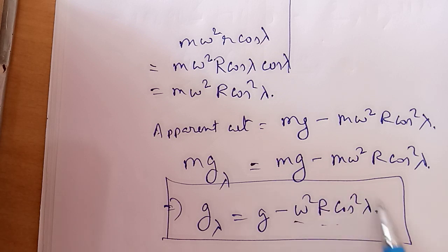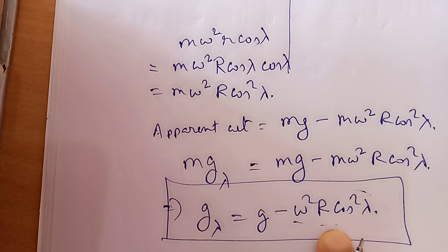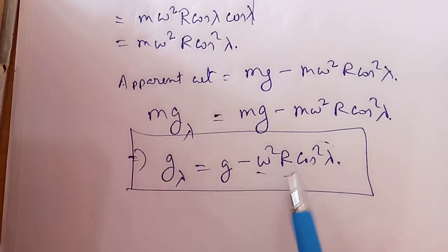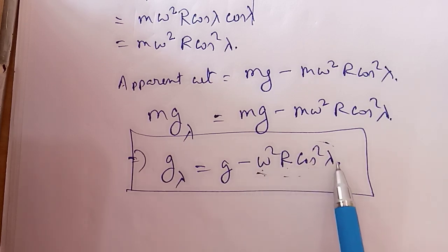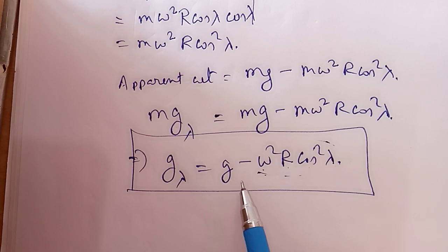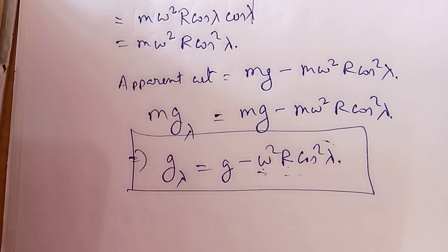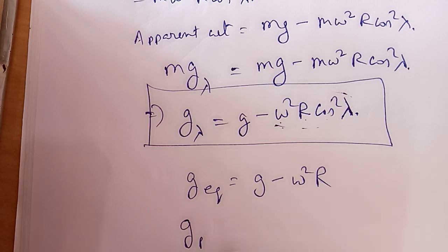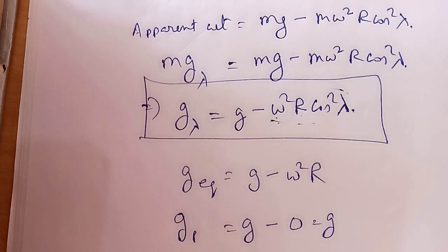At the equator, λ = 0°, so the reducing factor ω²R·cos²λ is maximum, making g minimum at the equator: g_equator = g − ω²R. At the poles, λ = 90°, so cos²(90°) = 0, meaning g_pole = g, the maximum value. So g is maximum at the poles and minimum at the equator due to Earth's rotation.